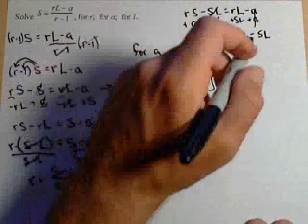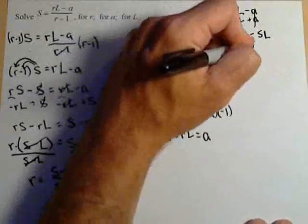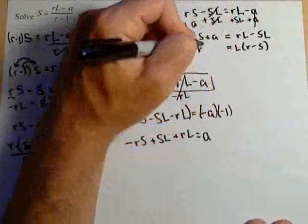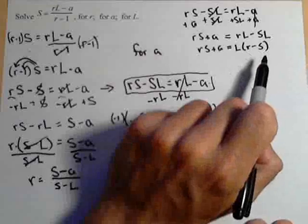We'll use the same technique we did last time, which is to factor out the L. So L times R minus S is equal to RS plus A. Same exact technique as before.